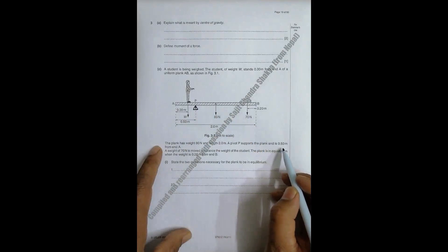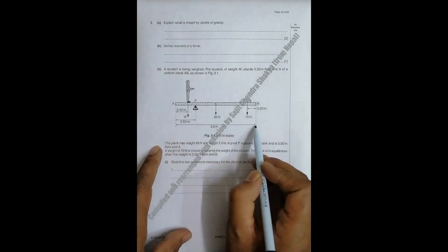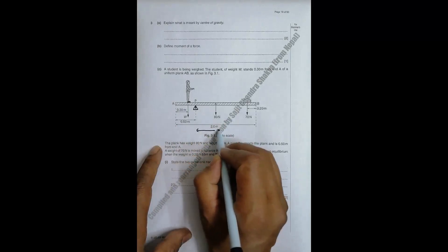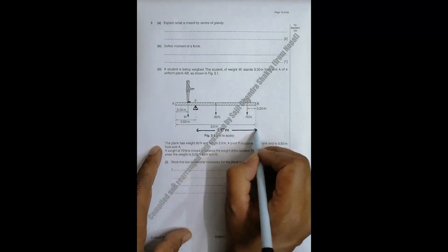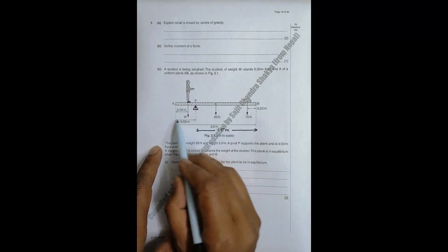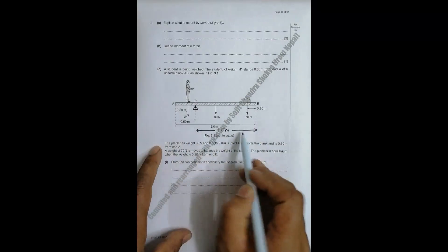And P is 0.50 meter from the end A. So since this is 2.0 meter and this is 0.50 meter, this distance will be equal to 1.5 meters. So this is 0.5, this is 2, this is 1.5, it's okay.